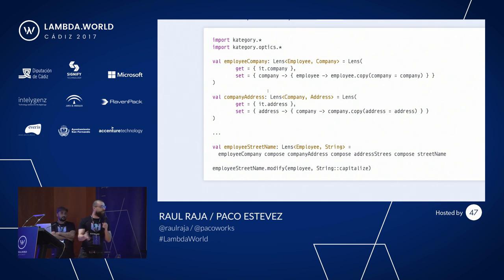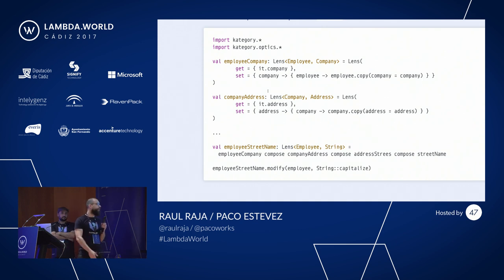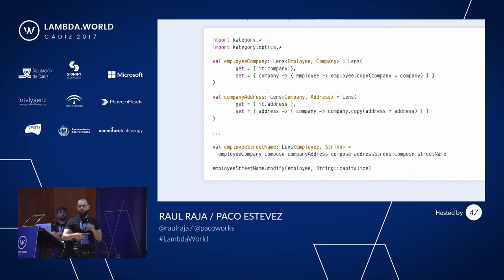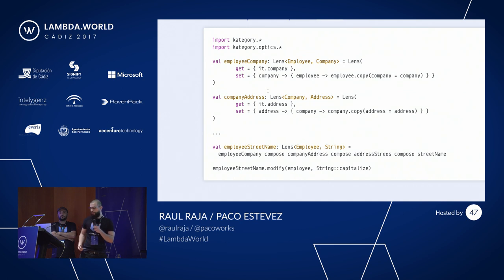The cool thing about this is that setters and getters don't compose, but lenses do. We can compose four lenses together and say we modified Employee, and we can now use a function that works on String to capitalize the street name.